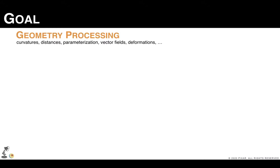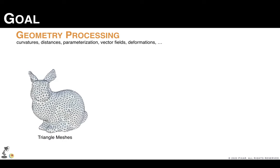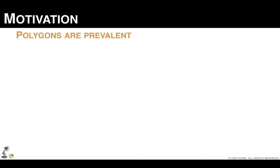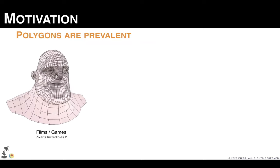Our goal is to make geometry processing tools originally developed for triangle meshes available for polygonal meshes. Our motivation is quite straightforward. Many industries rely on polygons instead of triangles. This is true for instance at Pixar, where we use quad-dominated meshes to define subdivision surfaces.